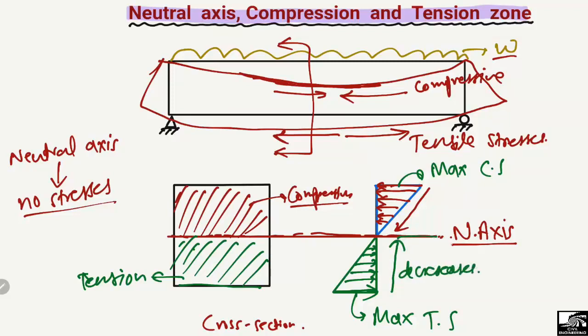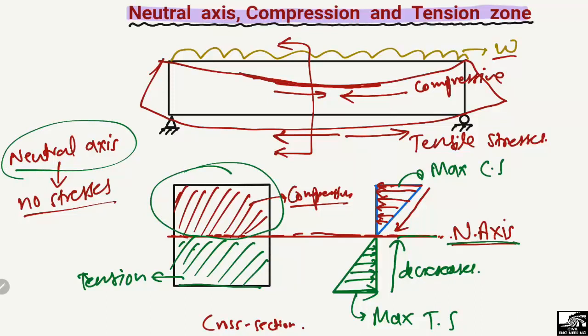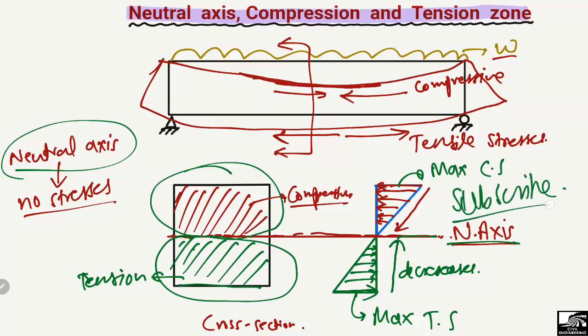At the neutral axis, both the tension and compressive stresses are zero. This is the general behavior of the beam: the neutral axis is in the middle, the compressive zone is above the neutral axis, and the tension zone is below the neutral axis. Hope you guys understand what the neutral axis, compression zone, and tension zone are for a simply supported beam under uniformly distributed load. Don't forget to subscribe. Thank you for watching.